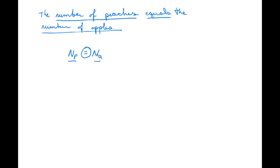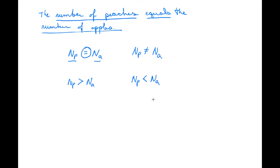The whole point of these mathematical expressions is to shorten a sentence into something we can visualize as values. So we're going to take some more of these and see if we can figure out how to write them. We have: the number of peaches does not equal the number of apples; the number of peaches is greater than the number of apples; and the number of apples is less than the number of apples. Those all make perfect sense if you know what you're seeing.